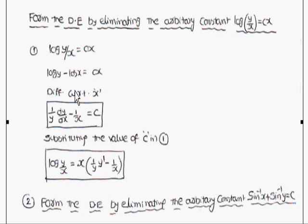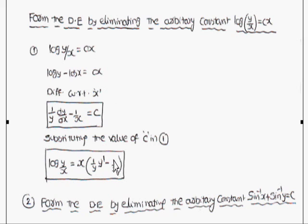Differentiating with respect to x, you will get (1/y)(dy/dx) − (1/x) = c. Our aim is to eliminate the arbitrary constant from the given equation. So we got the c value — just substitute the c value back into the original equation, and you will get the differential equation.